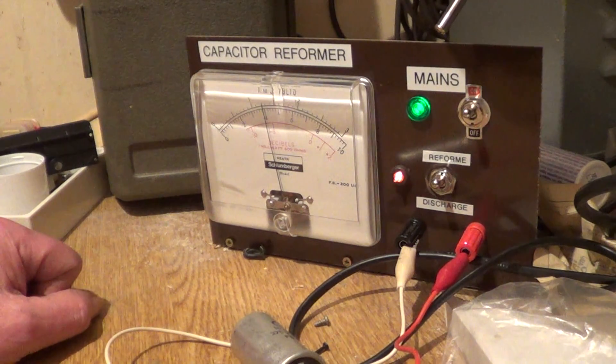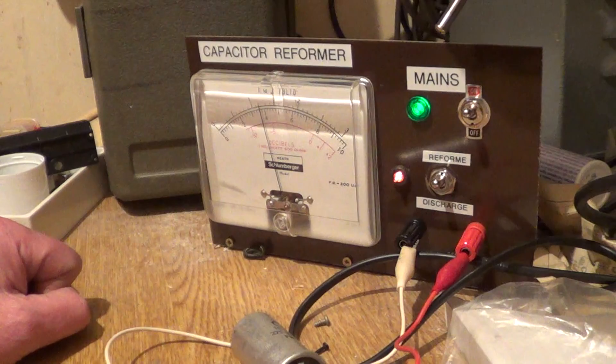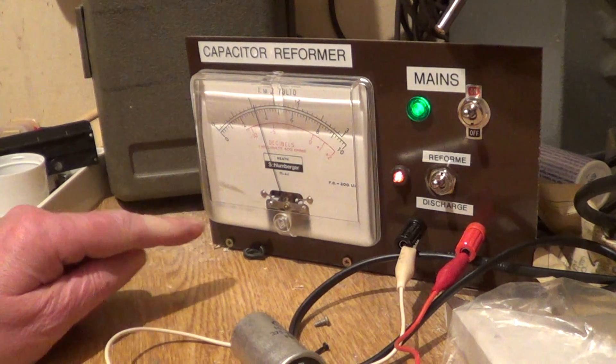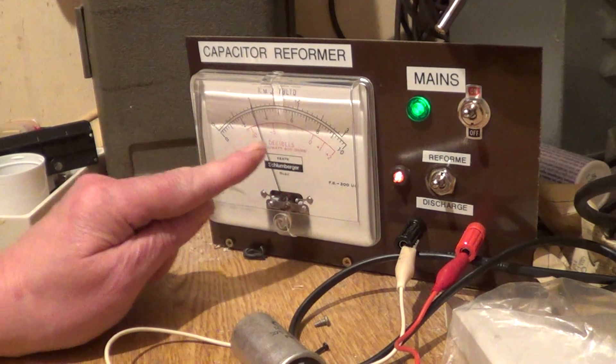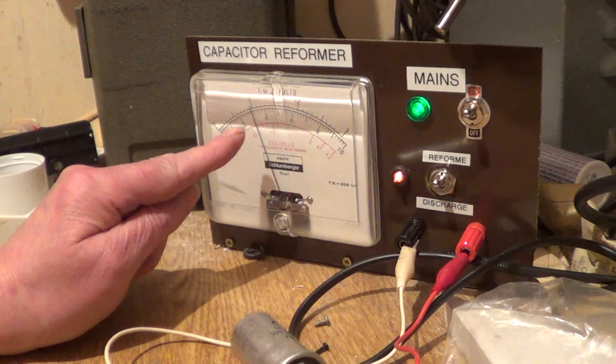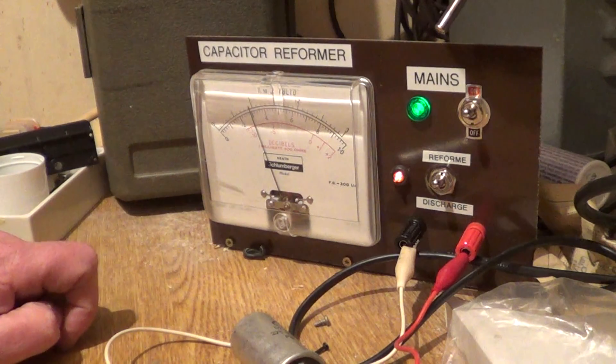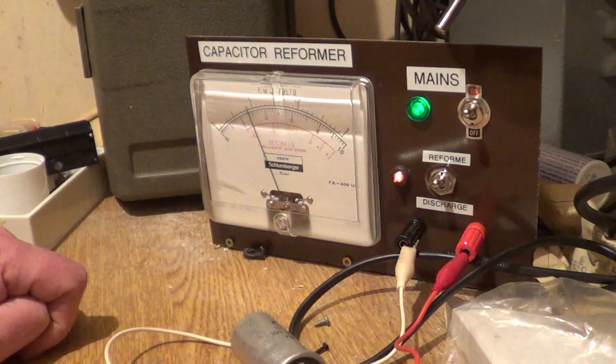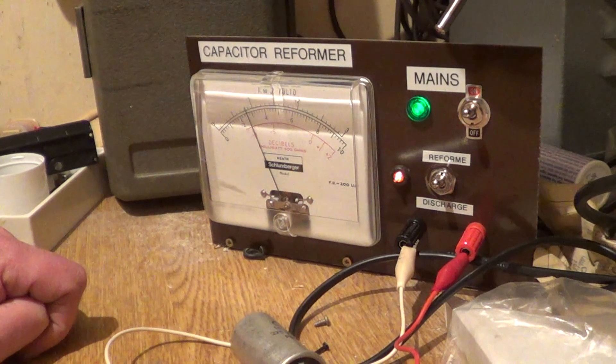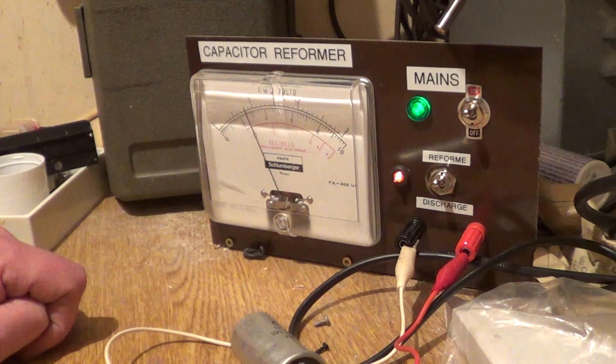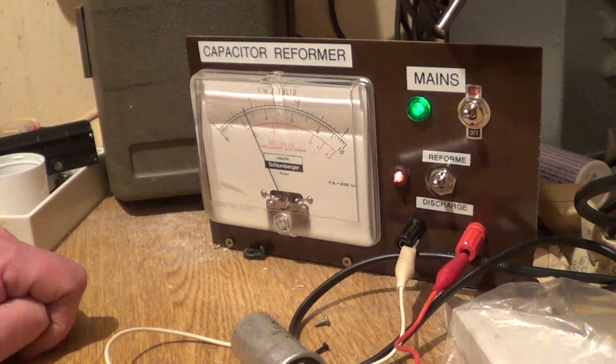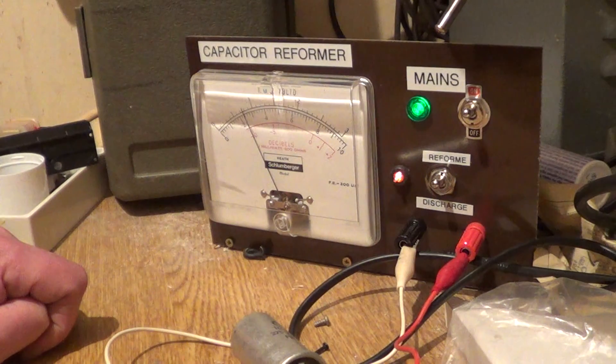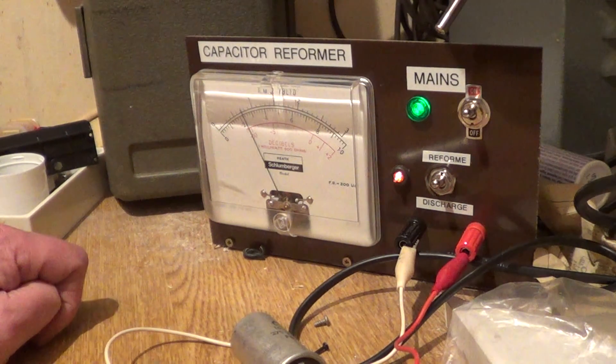Now this capacitor really shouldn't need much reforming, but we see the current started off high and it's now dropped down. We have just under one milliamp of current flowing through it. And this will drop gradually until it reaches almost zero. It won't go down to zero because it's an electrolytic.